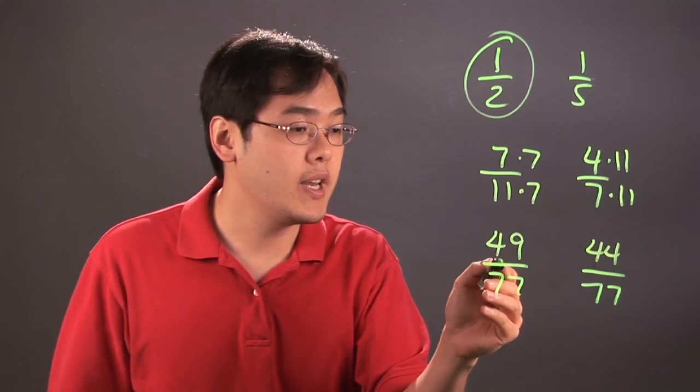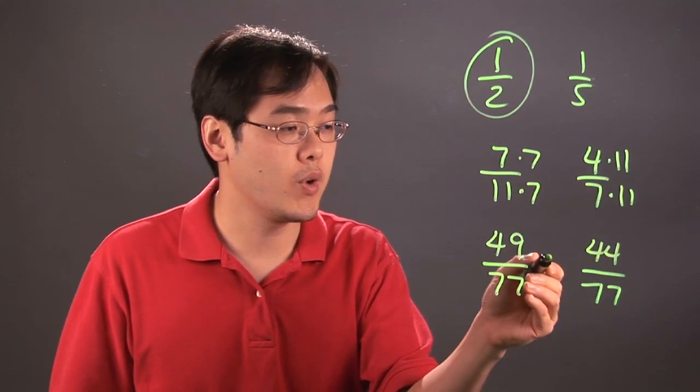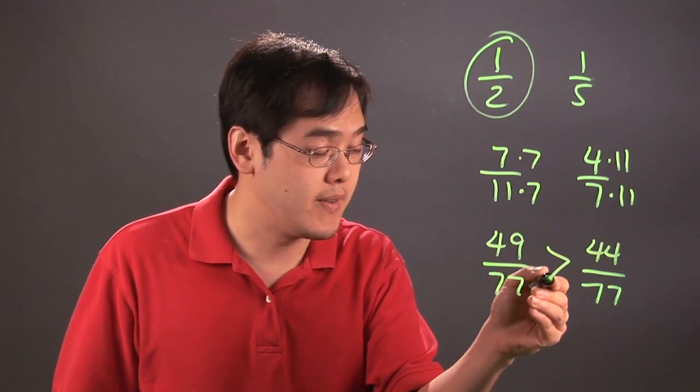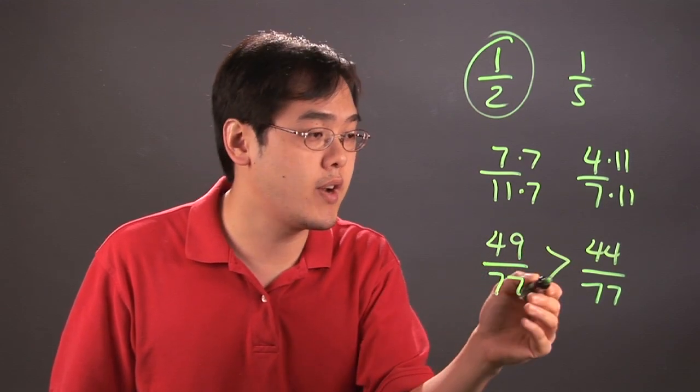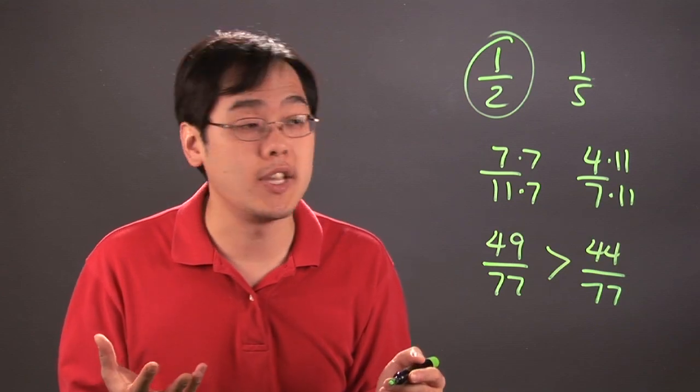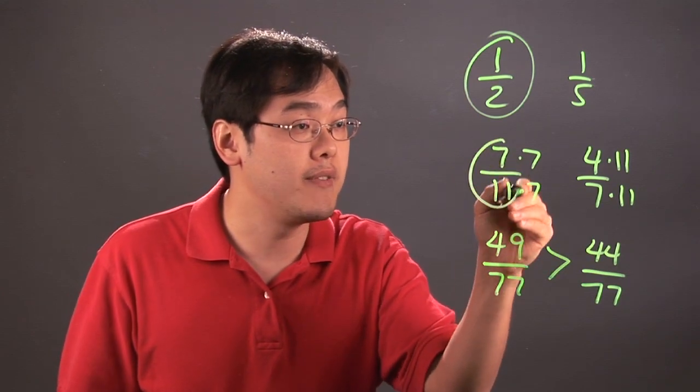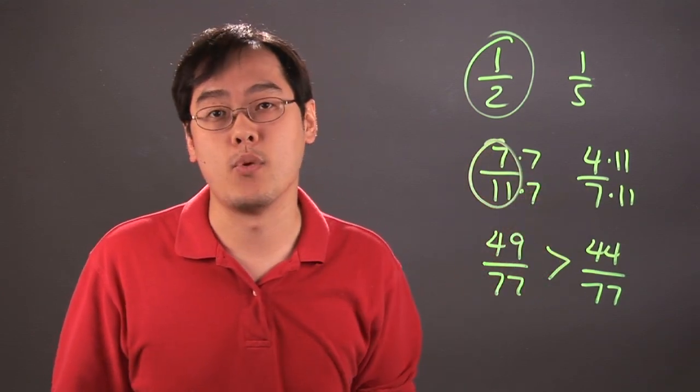And as you can tell, 49 over 77 is larger than 44 over 77. So what that tells us is 7 over 11 is bigger than 4 sevenths.